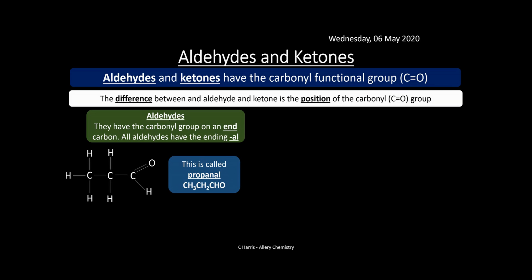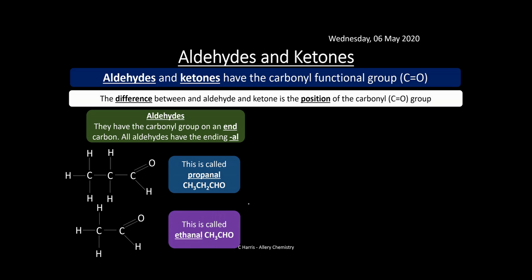Here's an example: this is propanal. Propanal has three carbons, so we call it prop-, and because it has the carbonyl group on the end carbon we call it propanal. This one is ethanal — it has two carbons, so this is called ethanal, which is CH₃CHO. You can see how it's written out as both a displayed formula and a structural formula.